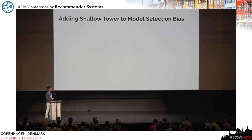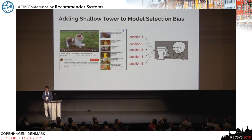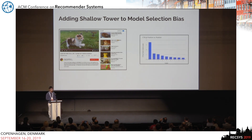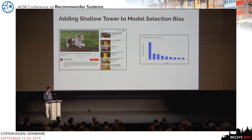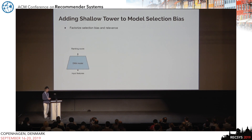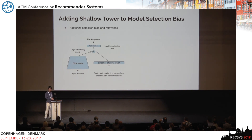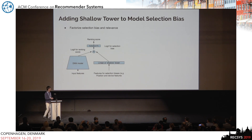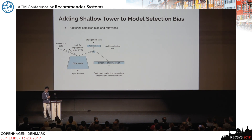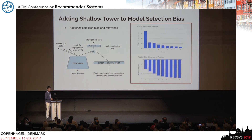Next, I'll discuss how we add a shallow tower to model selection bias. One example is position bias — users tend to click items shown at higher positions not only because they're relevant, but also because they're on top. This is reflected in training data where click-through rate drops significantly at lower positions, combining relevance and bias effects. We factorize the final ranking score into two parts: the main model takes all features to learn relevance, while the shallow tower takes only selection bias-related features like position to learn the bias part. The two parts are added and passed through a single activation function. In a multi-task setup, we apply this only on the engagement task such as clicks, and keep the satisfaction task as-is.